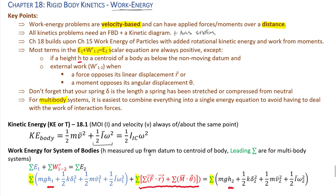Bringing it together: the overall work-energy equation has initial energy — gravitational potential energy, spring energy, and combined translational and rotational kinetic energy — plus work. Work can come from forces dotted with a distance, or from moments. When using a moment dotted with angle theta, make sure to convert theta into radians — degrees will not give the correct answer. This equals final total mechanical energy, which has the same terms as the initial energy.